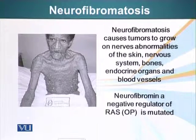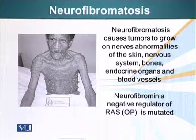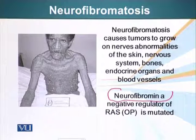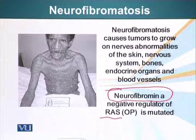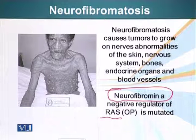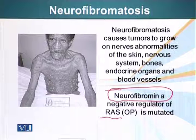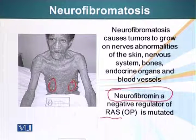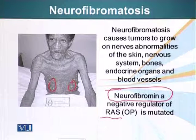Another case we discussed was neurofibromatosis. This is basically due to a mutation in a protein called neurofibromin, which is a negative regulator of RAS. Now we know what RAS does — RAS needs another protein to tell it to shut off. So if that protein is mutated, RAS stays constitutively on, resulting in uncontrolled cell division, which produces the tumors you can see on this particular patient. This is a dominant disorder — mutations in genes that code for regulatory proteins result in a disease transmitted in a dominant pattern of inheritance.